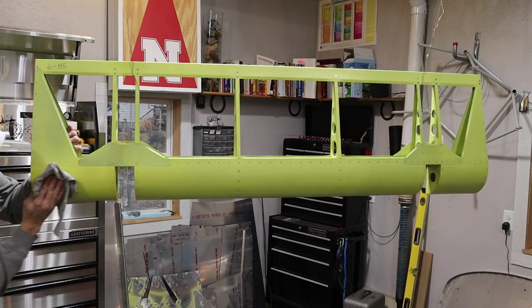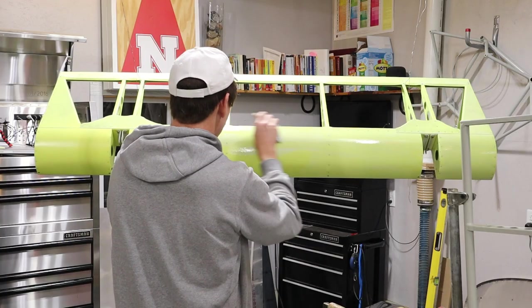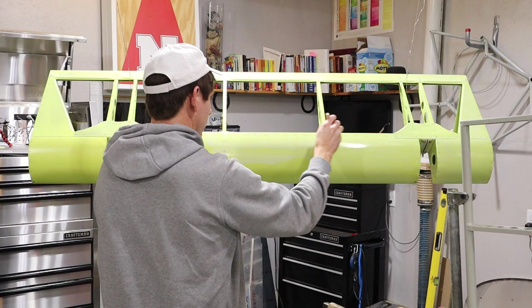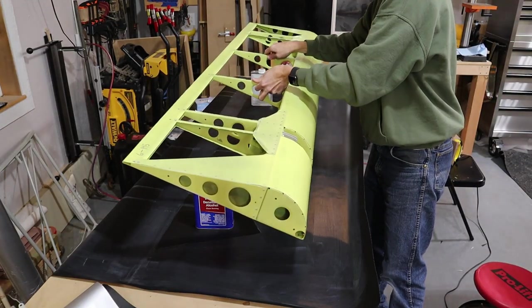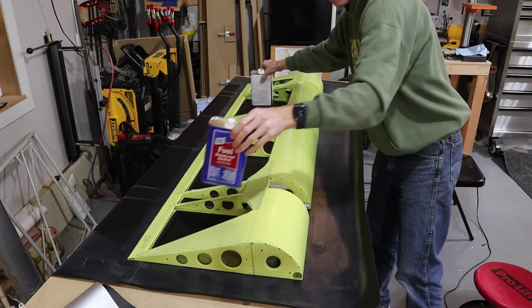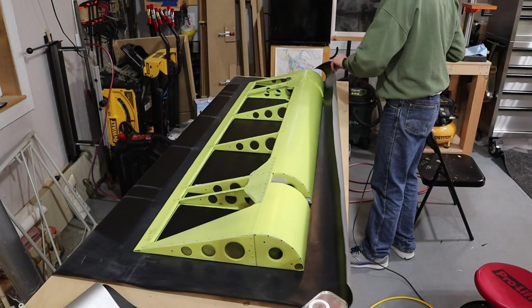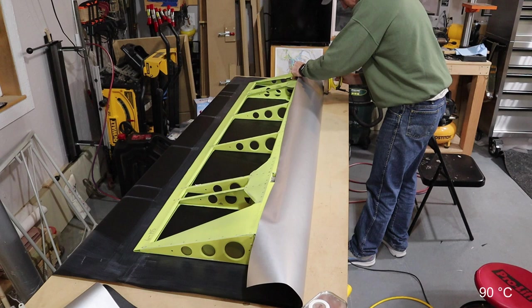Next I cleaned the ailerons well with denatured alcohol and put two layers of hot melt glue on both the ailerons and the fabric. After the glue had dried completely, I repositioned the aileron on the marks previously made and started to tack the fabric.